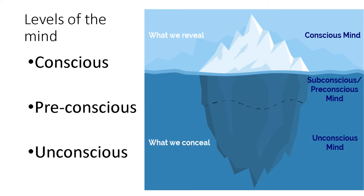Sigmund Freud compared the levels of the mind to an iceberg. The levels of the mind has three levels: Conscious, Pre-conscious, and Unconscious. The upper part, or the seen part of the iceberg, is the conscious mind. The submerged part of the iceberg, where we cannot see, is the subconscious mind and the unconscious mind. The lowest part of the iceberg is the unconscious mind.